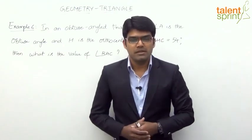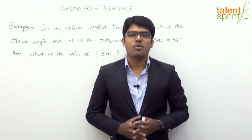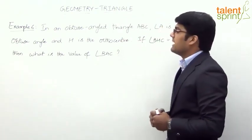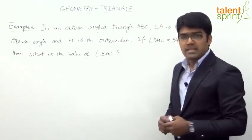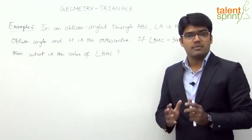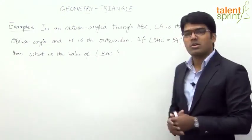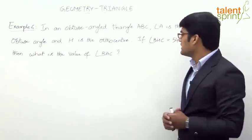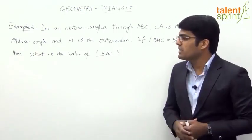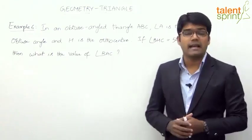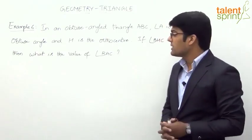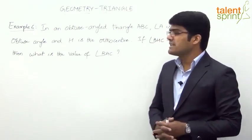Let us now solve a question based on the concept of orthocenter. In an obtuse angled triangle ABC, angle A is the obtuse angle and H is the orthocenter. If angle BHC is 54 degrees, then what is the value of angle BAC?